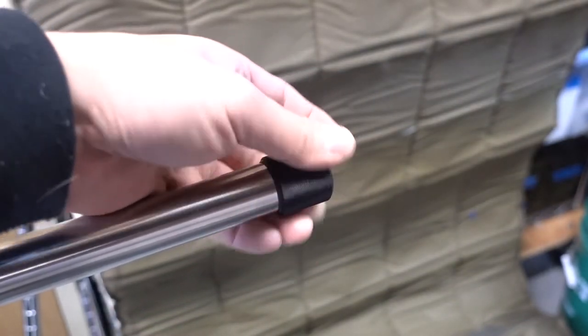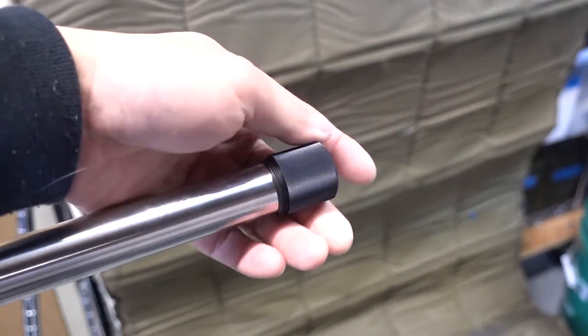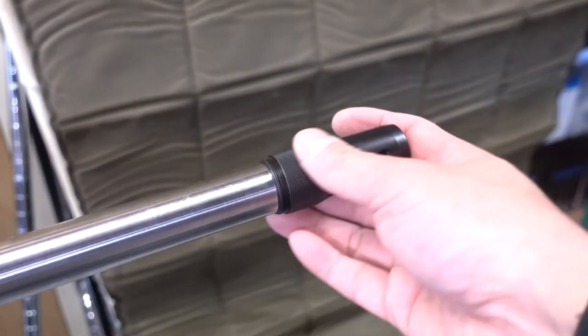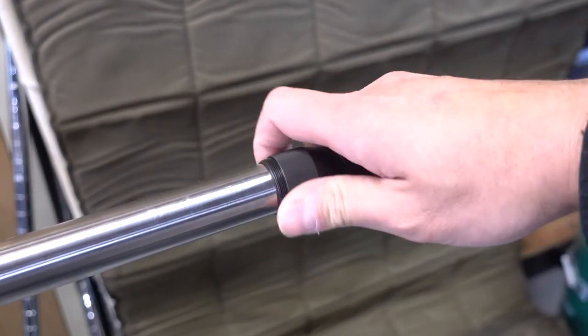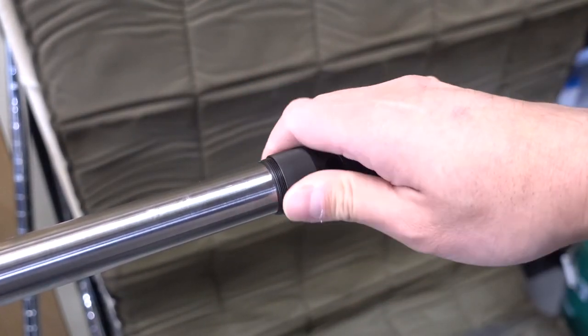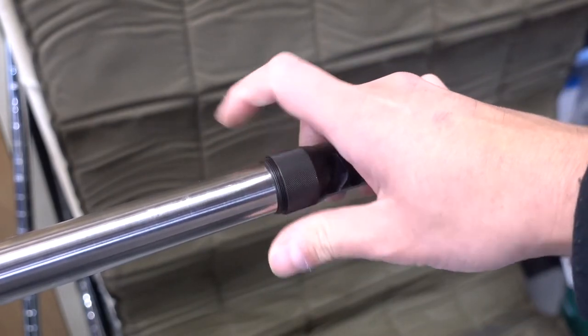And then, now that the rifle is broken in, I can run the thread protector, I mean not the thread protector. I can run the muzzle brake, or my suppressor.